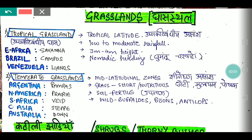Tropical grasslands are found in tropical areas. They receive moderate to low rainfall. The grass in tropical grasslands can grow to a height of 3 to 4 meters.